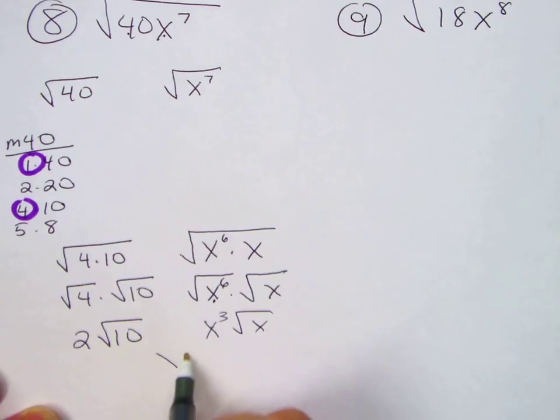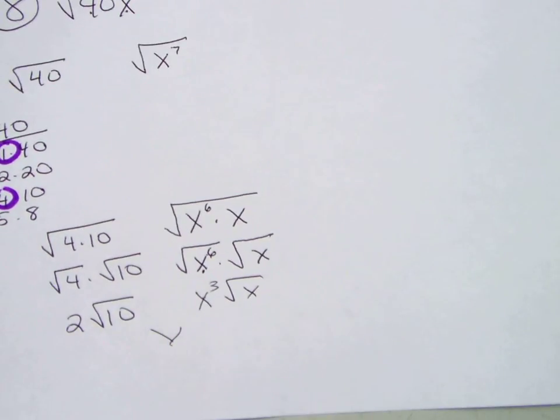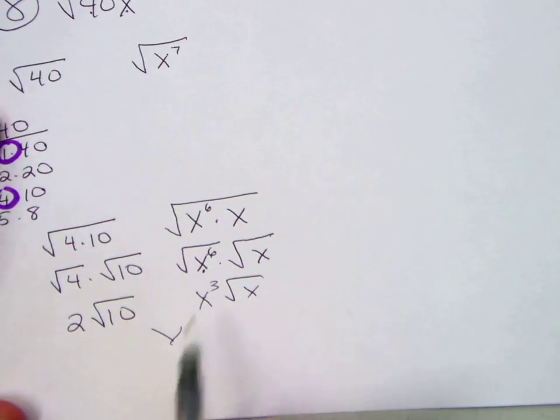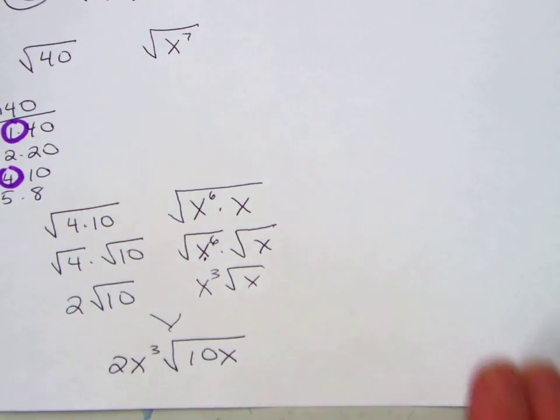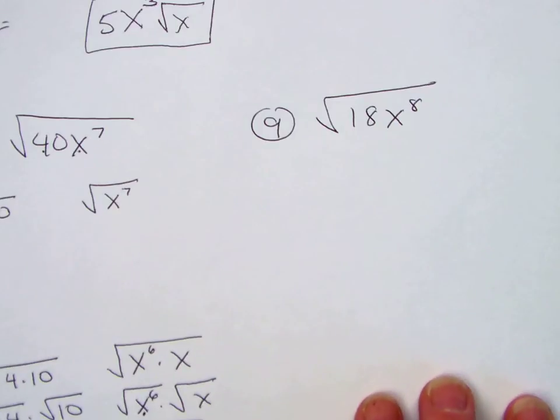Now I'm going to shmush them back together. Yes, that's a real math word. Shmush. Put the outsides together. Put the insides together. And you're done. Pause the video and try number 9 on your own.